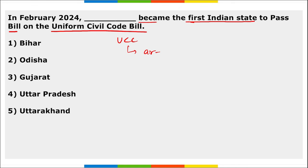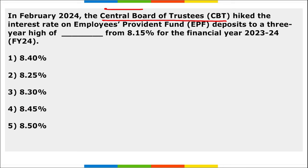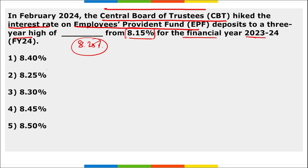In February, Uttarakhand became the first Indian state to pass a bill on the Uniform Civil Code (UCC). The article related to UCC is Article 44. Also, the Central Board of Trustees hiked the interest rate on EPF — Employees' Provident Fund — deposits to a three-year high of 8.25 percent, up from the earlier 8.15 percent for the financial year 2023-24.